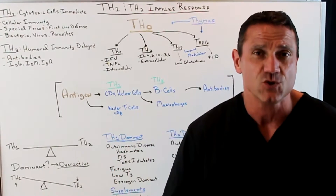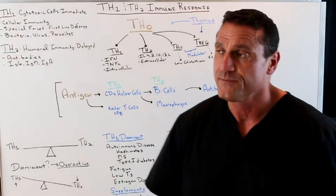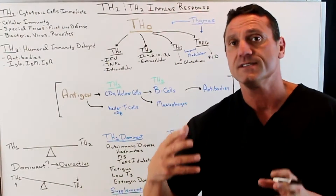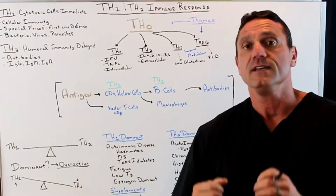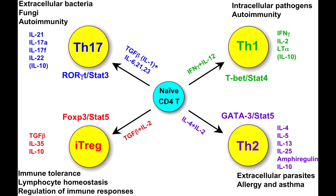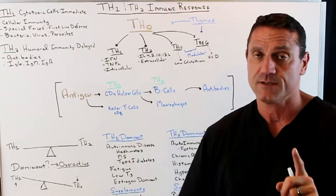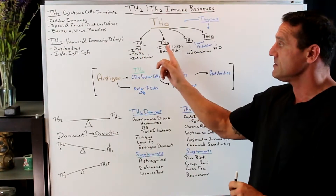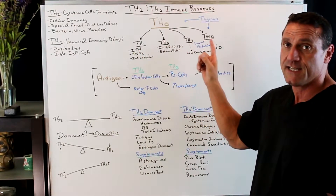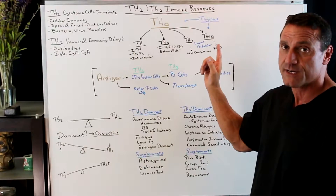It's just there but it doesn't do anything anymore. What the thymus gland does is it produces Th0 cells, and the Th0 differentiates into a bunch of other Th cells. In particular I want to talk about Th1, Th2, Th17, and the T regulatory cells.